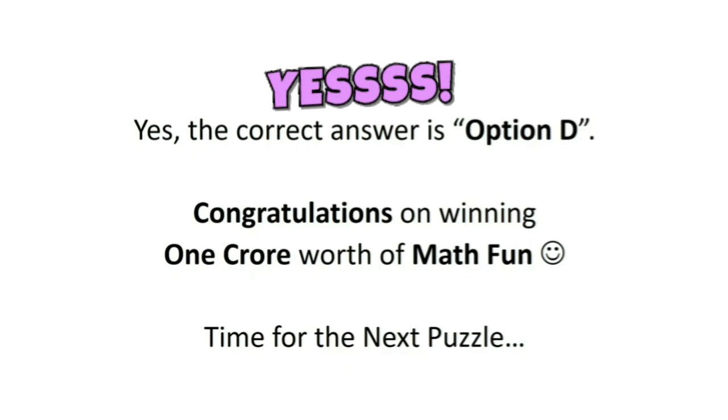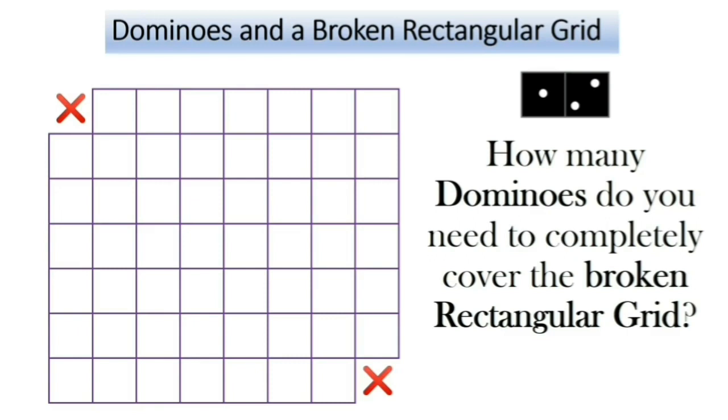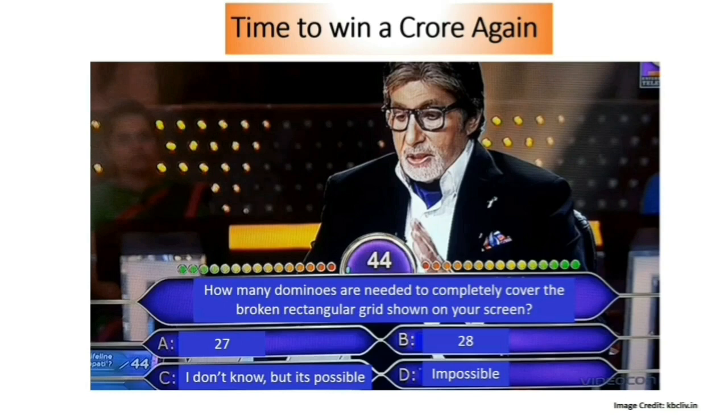Let's move on to the next puzzle. Dominoes and a rectangular grid. The question here is, how many dominoes do you need to completely cover the rectangular grid? We have an 8 cross 7 rectangular grid. Now what would be your answer? I think that was an easy one, but let's try this now. We have broken two corner pieces of this rectangular grid. And the question is, how many dominoes do you need to completely cover the broken rectangular grid? Do you think it's impossible or do you think it's possible?